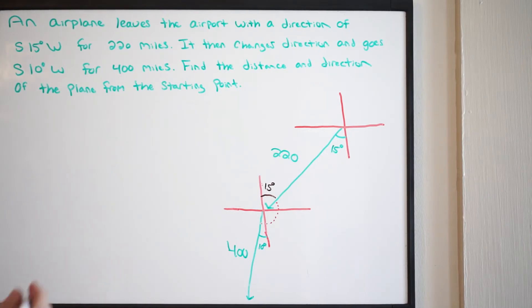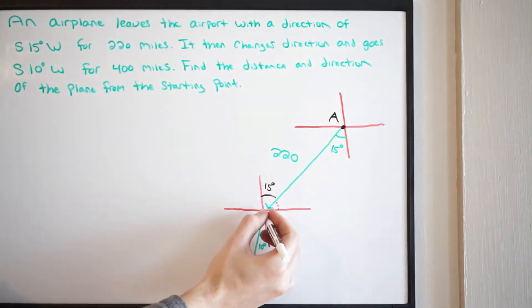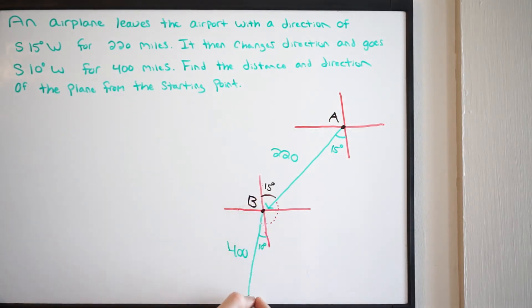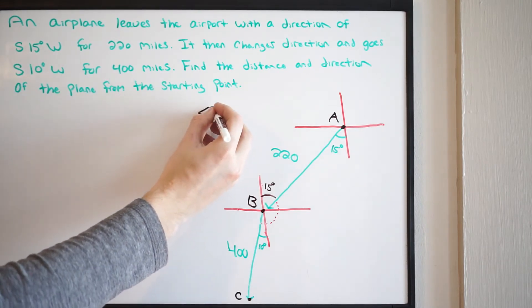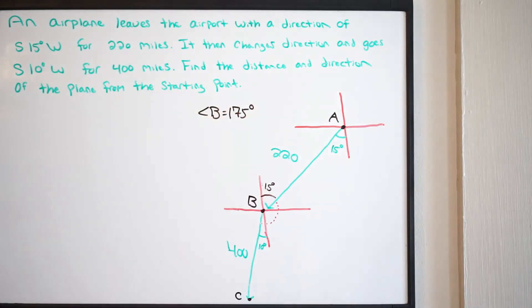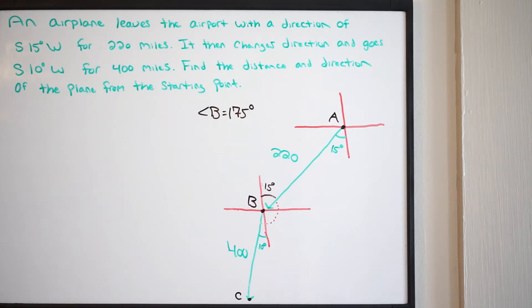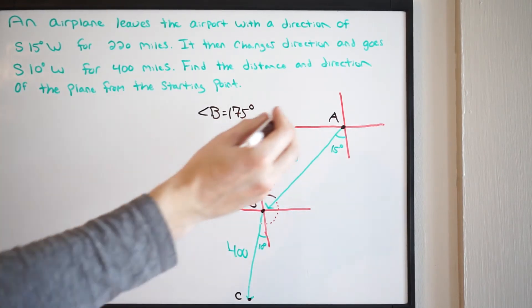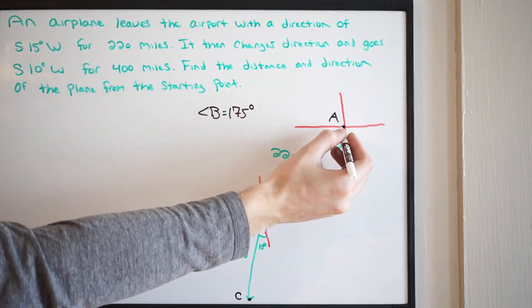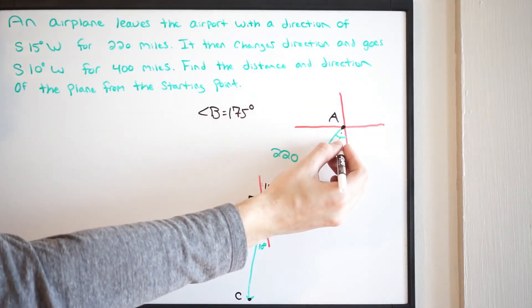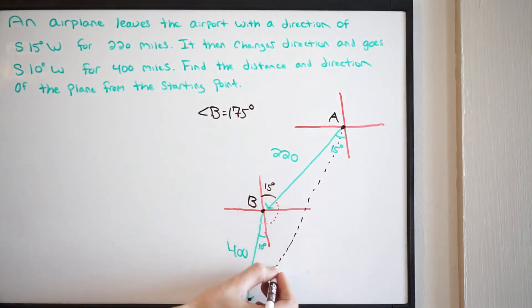So let's go ahead and start labeling this. We'll call this A, this B, and this C down here. Angle B is going to be 175 degrees. Now we can go ahead and put on our resultant vector, drawn with a dashed line, starting at the original point and connecting to the tip of our last drawn-on vector.